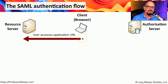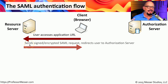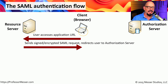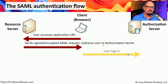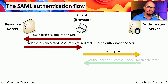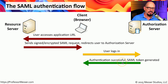We start with our browser accessing a URL located on the resource server. That server responds back with a signed and encrypted SAML request, sent directly back to the client. Inside that request is a redirection to an authorization server. The user is then presented with the login page and provides the authentication credentials. If everything matches, the authorization server confirms the authentication, creates a SAML token, and provides that token to the client.